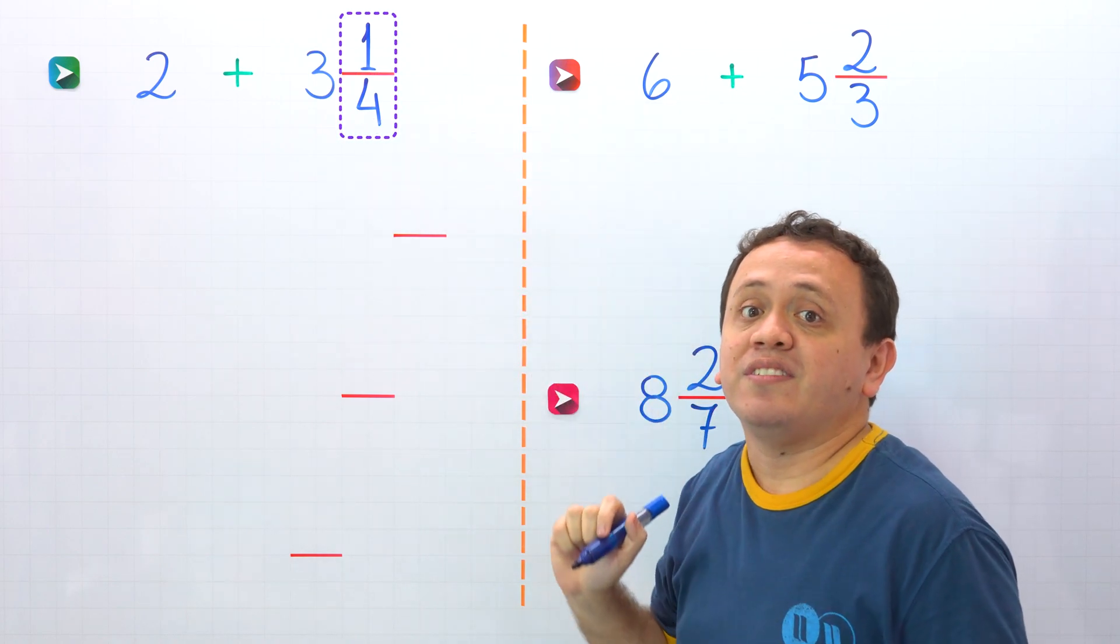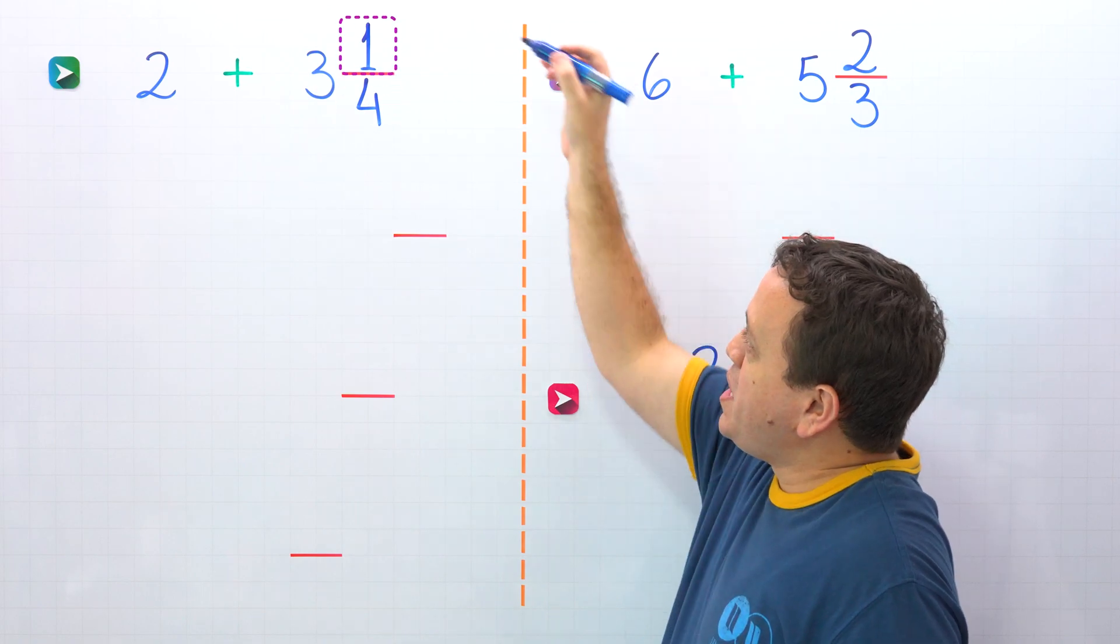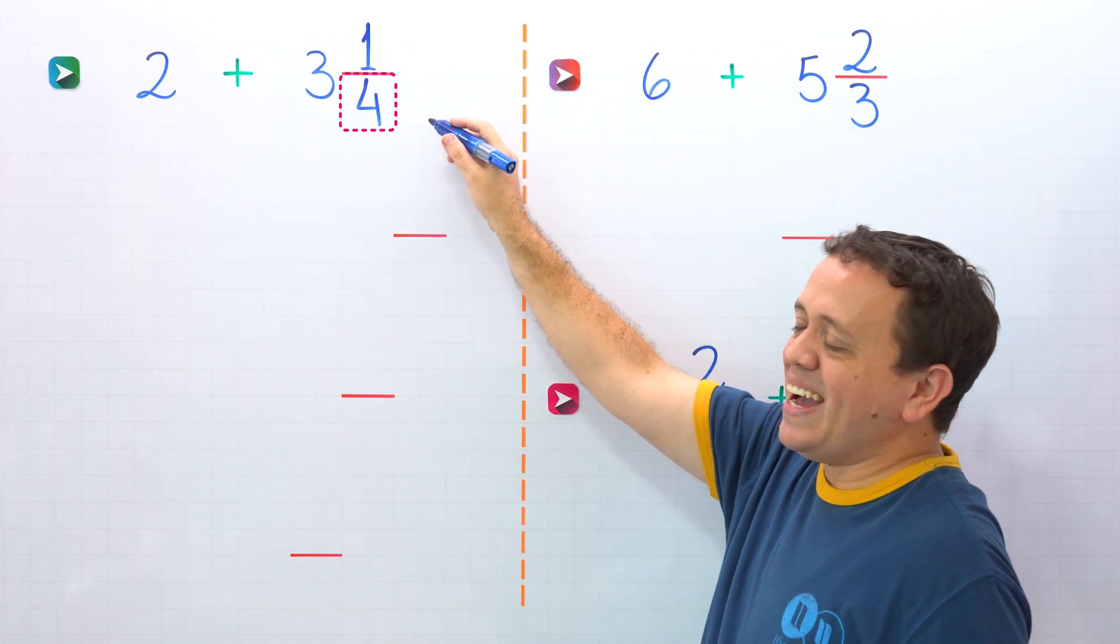For example, 1 fourth is a proper fraction, given that the numerator 1 is less than the denominator, 4. Nice!